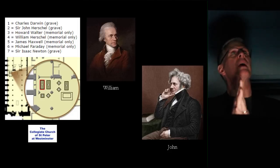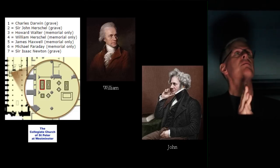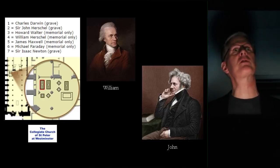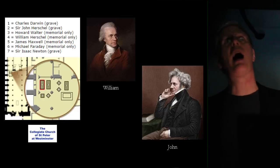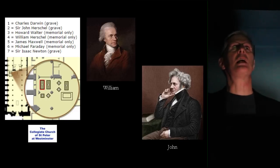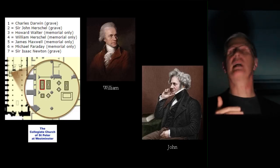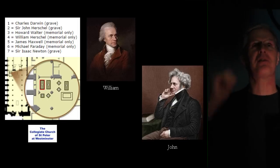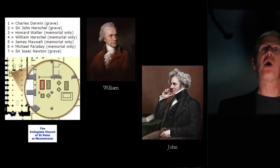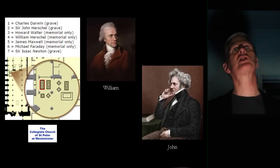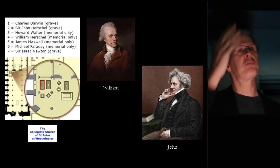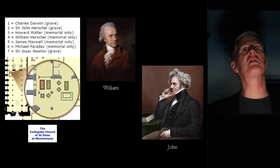This shows the burial spot of seven prominent scientists of the 19th century. John Herschel is buried right next to Darwin, which is just a few steps away from where Sir Isaac Newton is buried, with monuments to Michael Faraday and James Maxwell nearby. John Herschel was so widely admired for his scientific contributions that he was buried with these other great scientists of the 19th century.